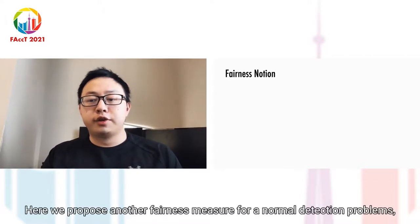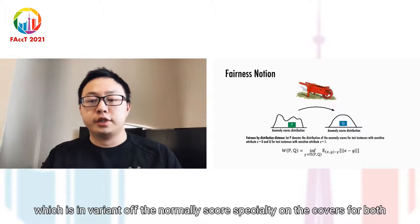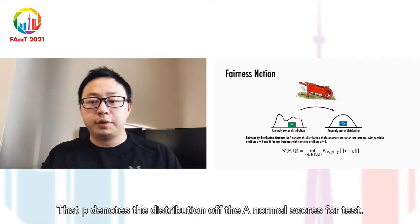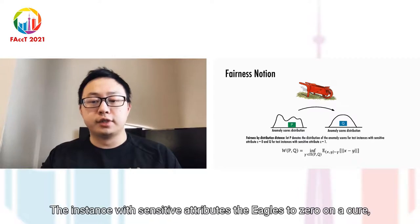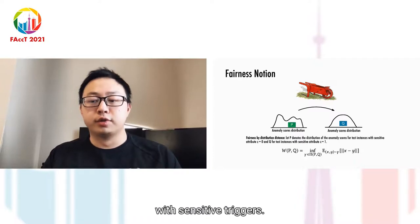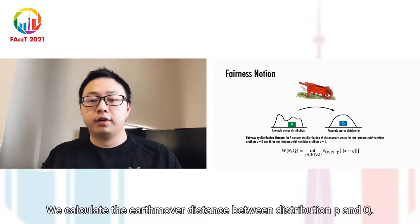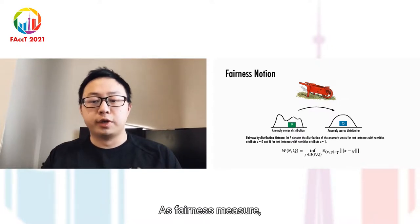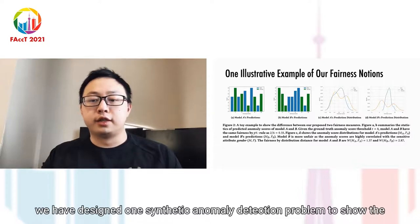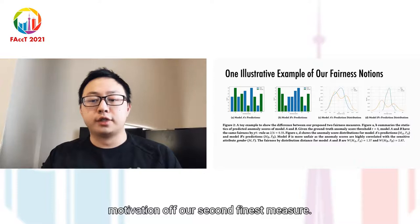Here we propose another fairness measure for anomaly detection problems, which is invariant of the anomaly score threshold T and covers both normal and abnormal groups. Let P denote the distribution of anomaly scores for test instances with sensitive attribute Z equals 0, and Q for instances with Z equals 1. We calculate the Earth's mover distance between distributions P and Q as the fairness measure.